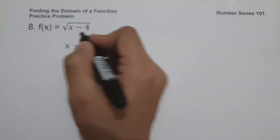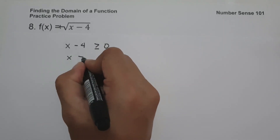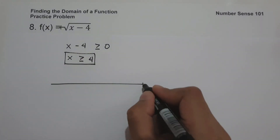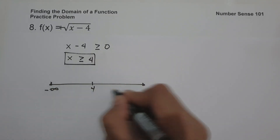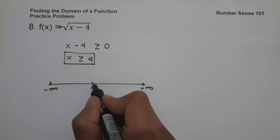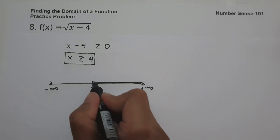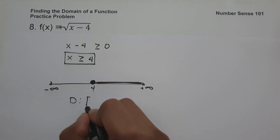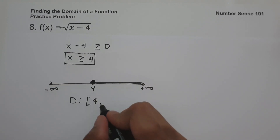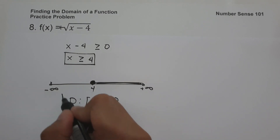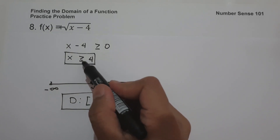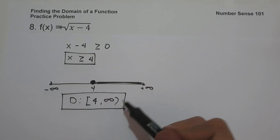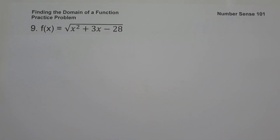We set x minus 4 ≥ 0, giving x ≥ positive 4. Drawing a number line with 4 marked, we use a closed circle because 4 is included. The domain is bracket 4, positive infinity. Always remember: if you have greater than or equal to, use a bracket; if less than, use an open parenthesis — and infinity always uses an open parenthesis.